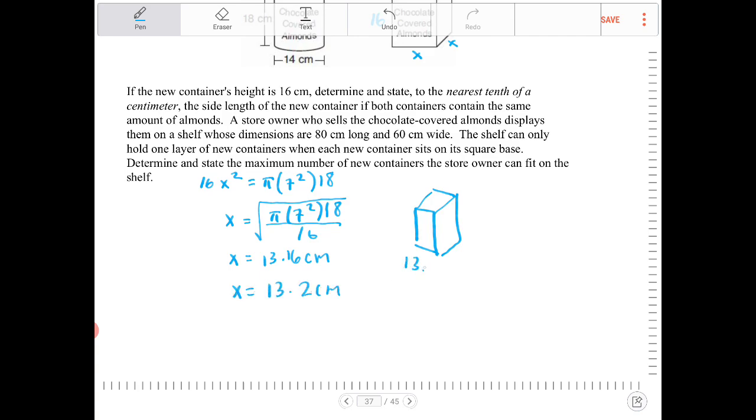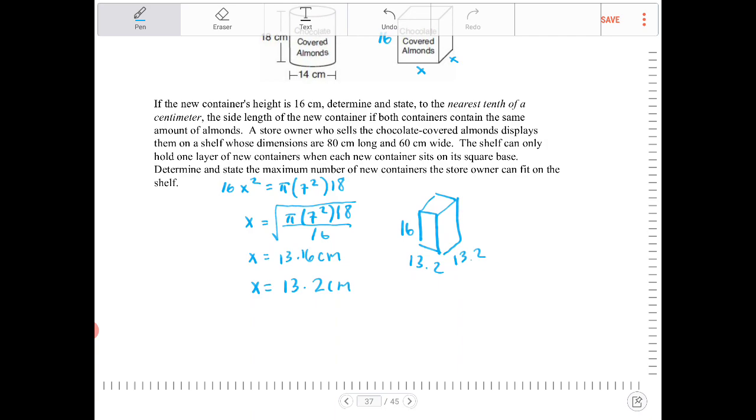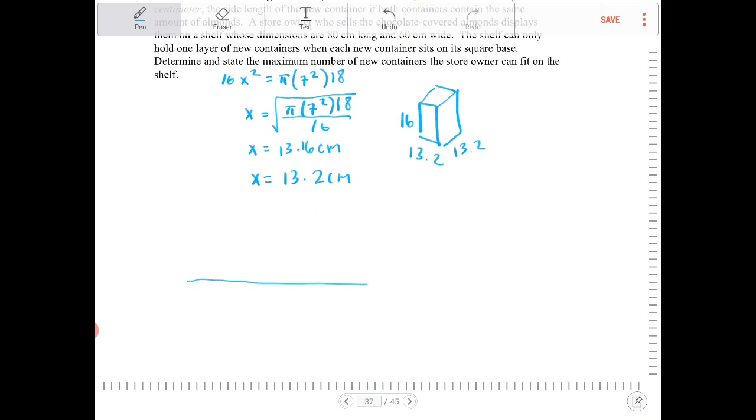So it's 13.2, 13.2, and 16, roughly. That's dimensions, and since we have a shelf measuring 80 by 60, it's going to be like this, 80 by 60.